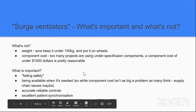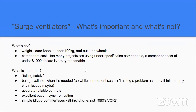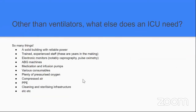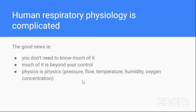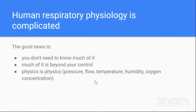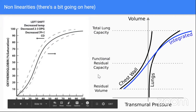A simple, idiot-proof interface is going to be vital, because ICUs will be staffed with people who are either very overworked and tired, or very inexperienced. Beyond ventilators, ICUs need a whole range of other things — it's important we recognize that. Human respiratory physiology is very complicated, but the good news is you don't need to fully understand it. Engineers can control the things they can control: pressure, flow, temperature, humidity, and oxygen concentration. Leave the physiology to the clinicians.